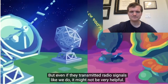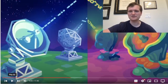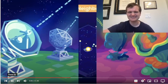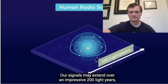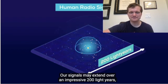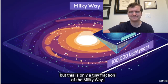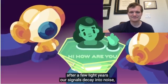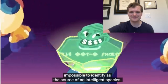But even if they transmitted radio signals like we do, it might not be very helpful. I love the alien version of our technology — big mushroom communications dishes. On an interstellar scale, humanity is practically invisible. Our signals may extend over an impressive 200 light-years, but this is only a tiny fraction of the Milky Way. And even if someone were listening, after a few light-years, our signals decay into noise, impossible to identify as the source of an intelligent species.